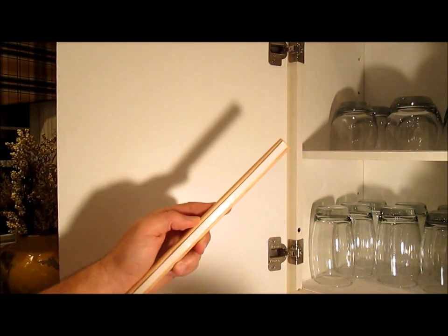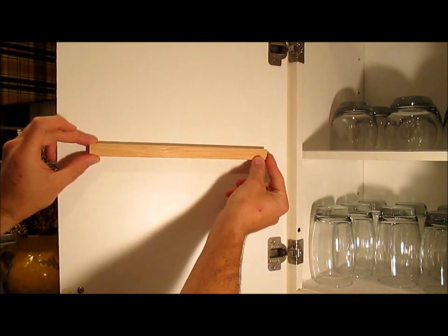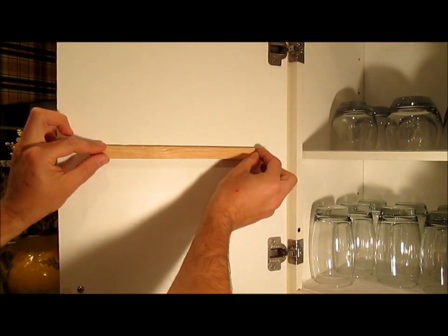Peel the backing off your first strip, line it up with a shelf here, center it on the door like this and press it on.